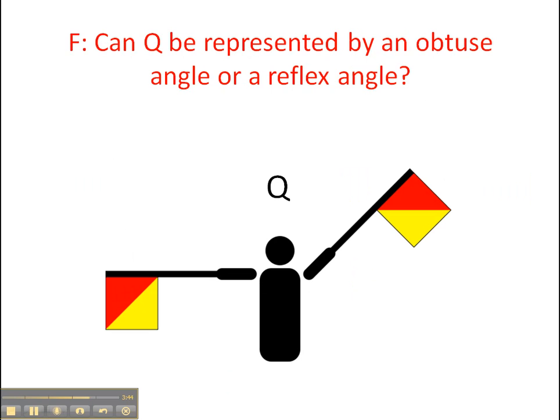Question F is: can Q be represented by an obtuse angle or a reflex angle, or both? And so an obtuse angle is one that is wider than a straight angle - so it's more than 180 degrees.